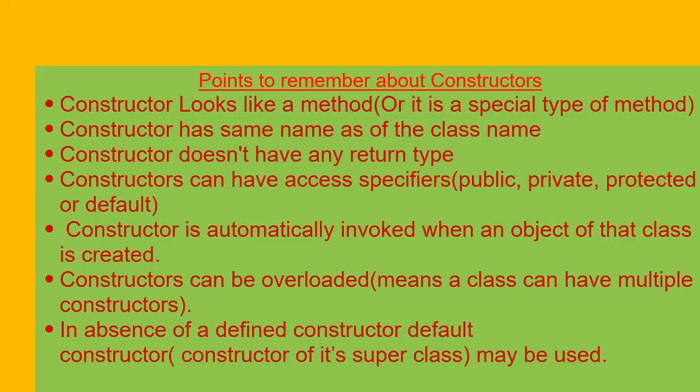Constructors can have access specifiers like public, private, protected, or default as defined in Java. The default constructor has the same access specifier as the class in which it is declared. A constructor is automatically invoked when an object of that class is created. Constructors can also be overloaded, meaning a class can have multiple constructors.